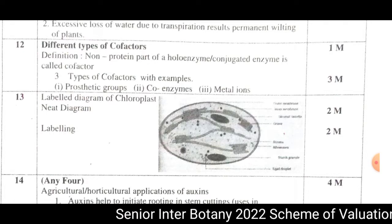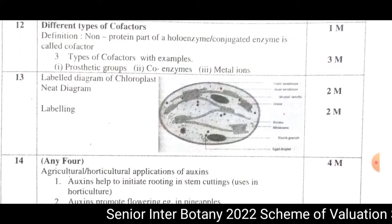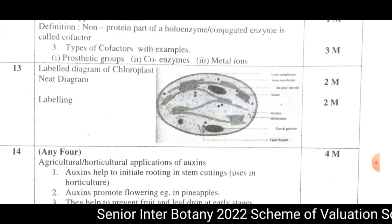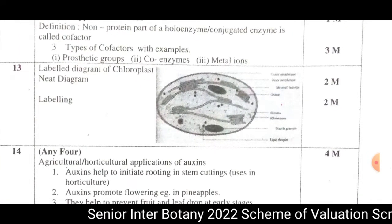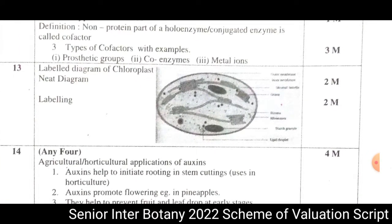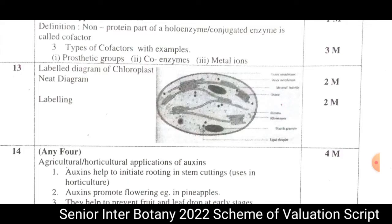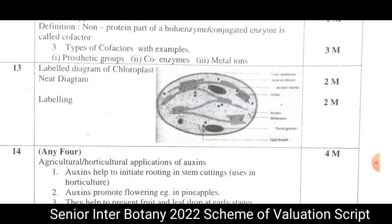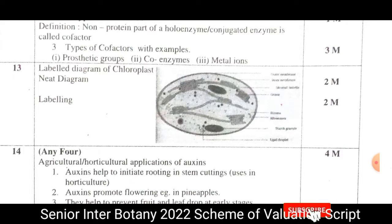The 13th question is a very easy question on chloroplast structure. You need to draw and label the diagram. The diagram itself is 2 marks and the labeling is 2 marks, for a total of 4 marks.